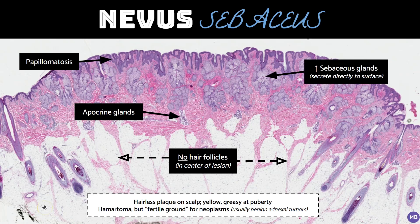The last entity I want to cover is nevus sebaceus, which is actually a hamartoma but is often included when discussing sebaceous tumors due to the prominent sebaceous component. Clinically, it is a hairless plaque on the scalp which is present at birth. When the patient reaches puberty, the effects of sex hormones cause enlargement of the sebaceous glands, including those that are part of the lesion, which makes it appear more prominent and greasy. This is a nice low-power diagnosis. You can see papillomatosis and an increased number of sebaceous lobules, which secrete directly onto the skin surface without an associated hair follicle. Hair follicles are absent, which is really quite striking in this photo. In addition, sweat glands are often apocrine instead of eccrine — and thinking back to normal skin histology, apocrine sweat glands are normally only present in the anogenital region, axillary region, and eyelids. Although this lesion is non-neoplastic, it is not uncommon to see neoplasms arising within it. Benign adnexal tumors are most common, but rarely epithelial and adnexal malignancies can occur.